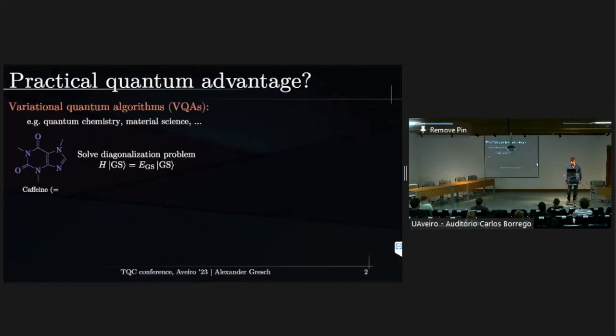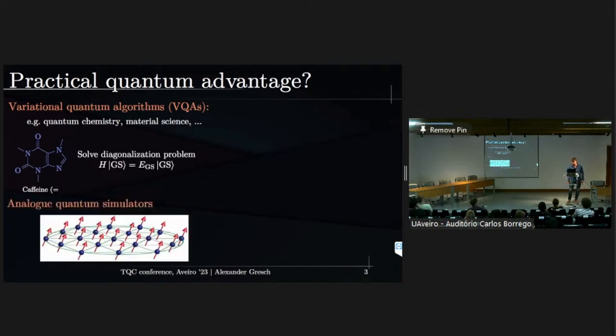To give you a motivation, I think the whole field is striving to find a practical quantum advantage, an advantage which actually makes a difference for practical purposes. These practical purposes are believed to be in quantum chemistry or material science. We effectively solve a diagonalization problem of promising molecules or catalysators. As an answer, it's class variation in quantum algorithms, but we heard there were a lot of limitations on them. There's also another more NISQ alternative, and these are analog quantum simulators as a perspective.